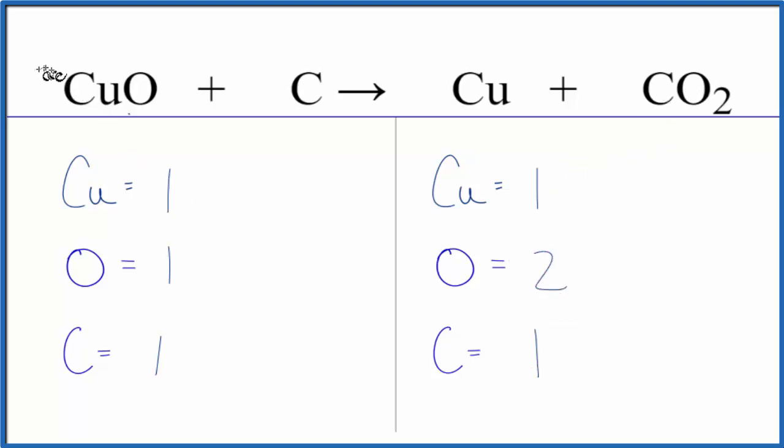So we have to put a 2 in front of the CuO as the coefficient. One copper times two, that gives us two, but for the oxygens, one times two. That gives us two, and that balances the oxygens.